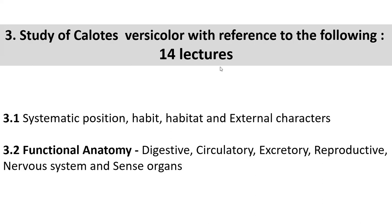Calotes versicolor - Calotes is the genus name and versicolor is the species name. As with Pila globosa, we have systematic position, habitat, habitat and external characters. The same points have been given for Calotes. And second is the physiology - functional anatomy. Physiology is the branch of science which deals with the study of body functions: digestive system, circulatory system transmitting nutrition, respiratory gases, enzymes and hormones; excretory system for separation and elimination of nitrogenous waste; reproductive system; and nervous system with sense organs.